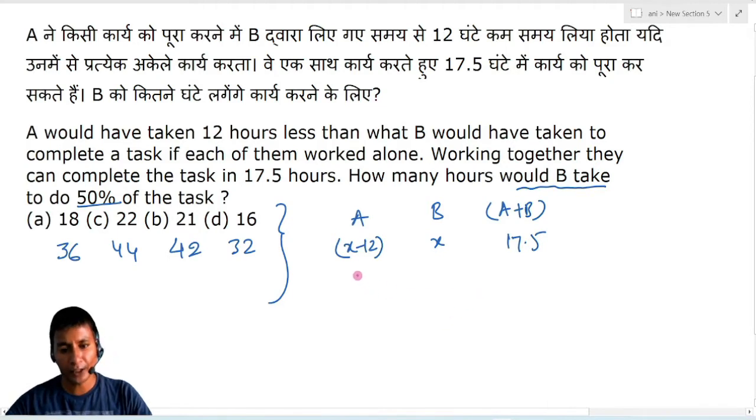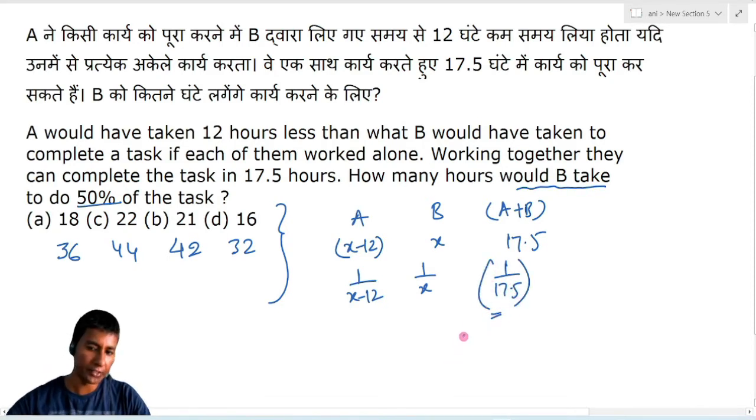So, A will be per hour efficiency? X minus 12. B will be how much? 1 by X. And A plus B will come combined efficiency. How much will it take? 1 by 17.5. This expression is the answer to you.